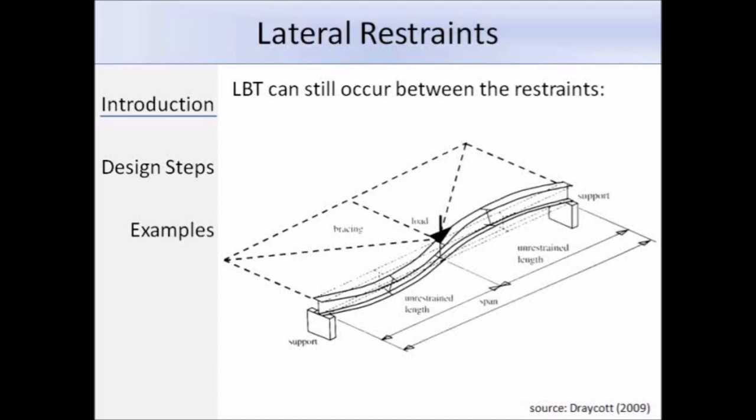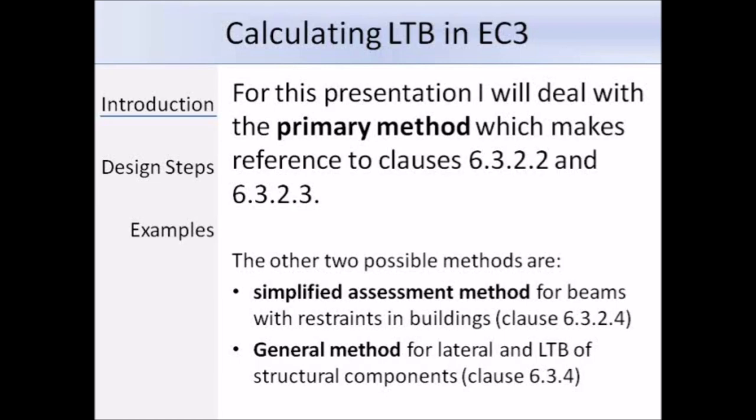There are three possible methods to calculate the LTB resistance of a member. The method I will use in this presentation is the primary method which makes use of clauses 6.3.2.2 and 6.3.2.3 in Eurocode 3 and will use the buckling curves. Another method is the simplified assessment method which makes reference to clause 6.3.2.4 but I would not recommend this method. And the final method is the general method which is covered in clause 6.3.4 and it deals with eigenvalues. For someone familiar with using BS 5950, you will find values like U and V in the section tables, but in Eurocode 3 such simplification factors do not appear.